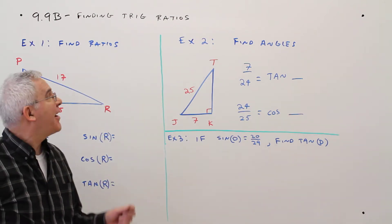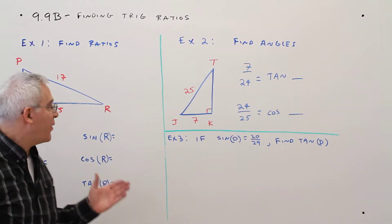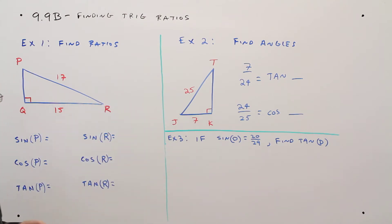Welcome to video 9.9B, finding trig ratios. So I've got three examples here. First example,